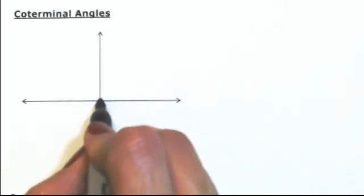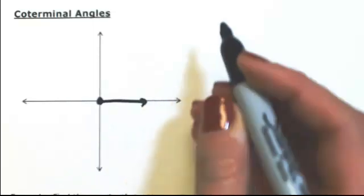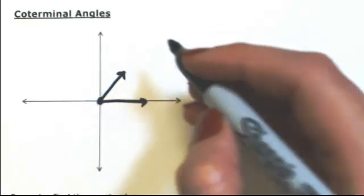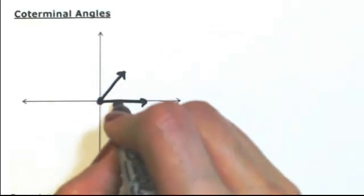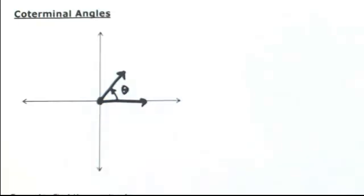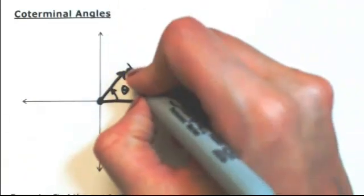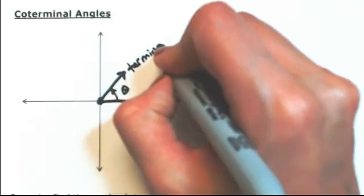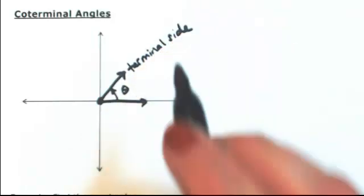Suppose we have an angle in standard position, say it's in the first quadrant, we call it theta. Where theta ends is called the terminal side of that angle.